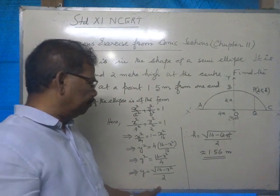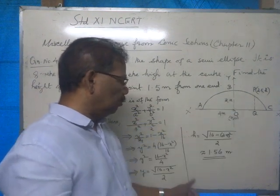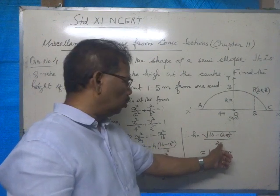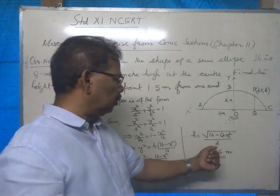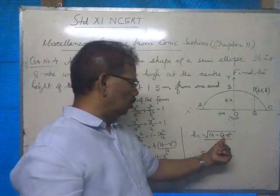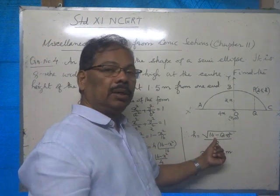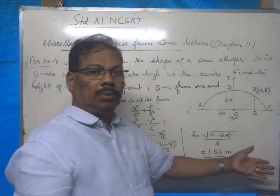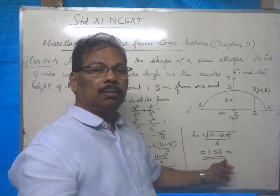Now simply put the value of x at that particular point. The value of x is 2.5, so y equals square root of 16 minus 2.5 squared by 2. Using a calculator: 2.5 squared is 6.25. On subtraction we get 9.75. Square root of 9.75, obtained from a calculator, gives the answer approximately 1.56 meter.